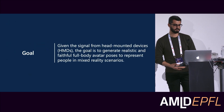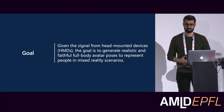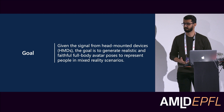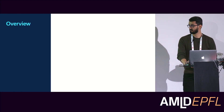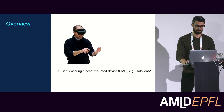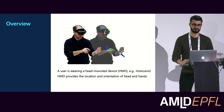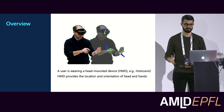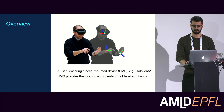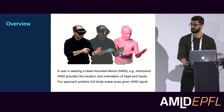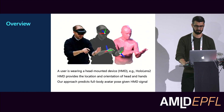The goal of this project is to generate high-fidelity and plausible avatar poses given the signals coming from a head-mounted device for mixed reality applications. Given a person wearing a HoloLens, for example, we have information about the head location and orientation as well as the hand location and orientation whenever they are in the field of view of the device. From that sparse signal, we would like to generate the 3D avatar pose — hopefully the full-body pose.